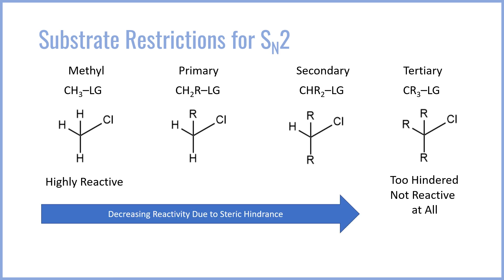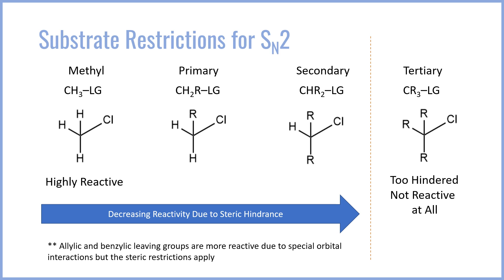In general, SN2 reactivity decreases as substitution increases. Methyl substrates are by far the most reactive, followed by primary and then secondary. There is a clear line between secondary and tertiary: secondary can react via SN2, but tertiary cannot. It is also important to mention allylic and benzylic substrates, where the leaving group is adjacent to a pi bond or benzene ring — these are more reactive than the corresponding regular substrate. However, steric restrictions still apply: a tertiary species will never react via SN2, regardless of whether it has adjacent pi bonds. We'll talk later about why pi bonds actually enhance SN2 reactivity.